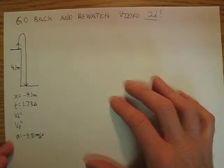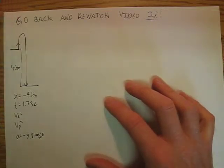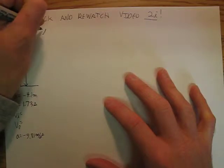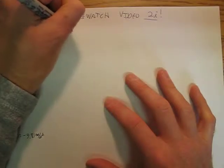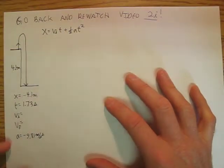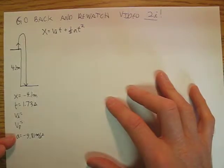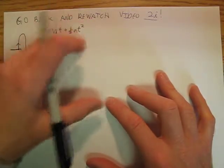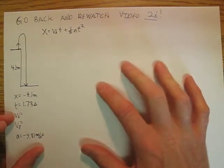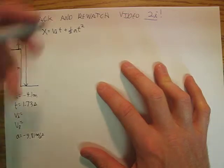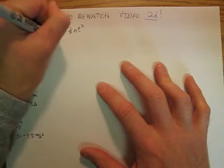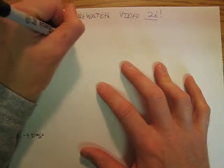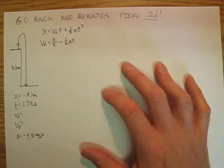Okay, and so to go back and redo this, we have this equation for finding vi. I want you to hit pause and manipulate that equation to solve for vi. When I do that, I come up with vi equals x over t minus one-half at. If you didn't get that, take a second to figure out what you need to do to get that.